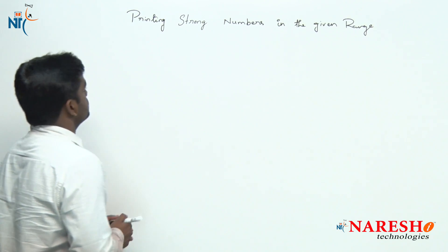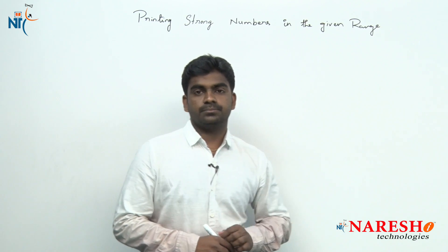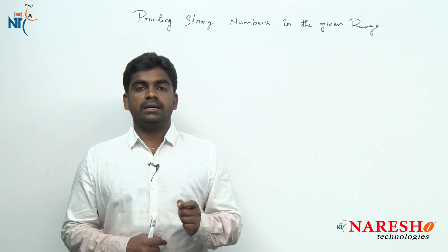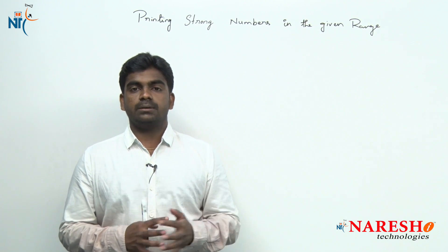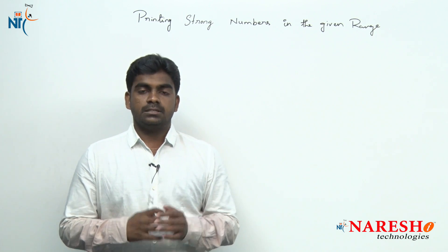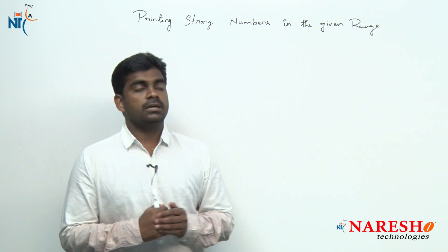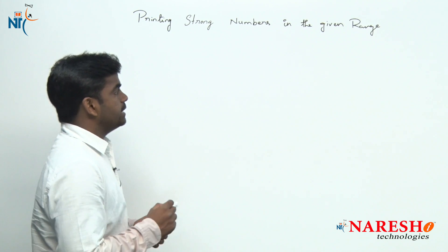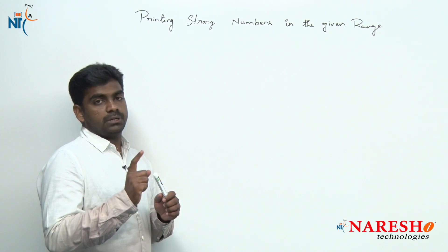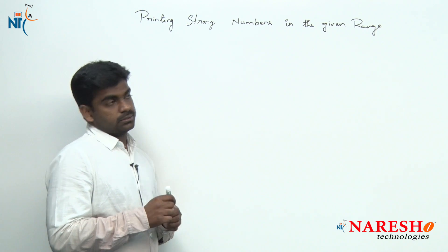This program is for printing strong numbers in the given range. We already discussed how to check whether a given number is a strong number or not in the previous video sessions. Just go through that video and check this one. First, I am writing the logic for how to check whether one number is a strong number or not.